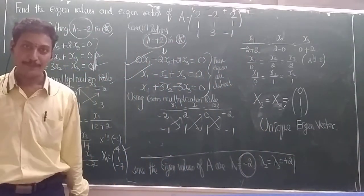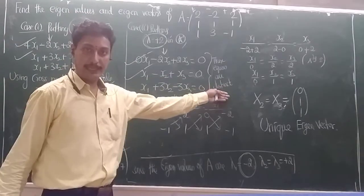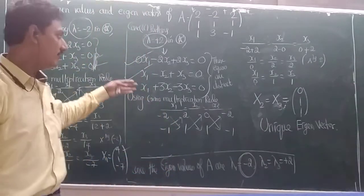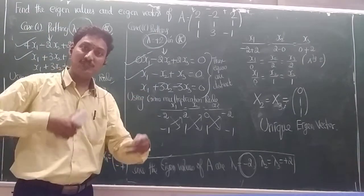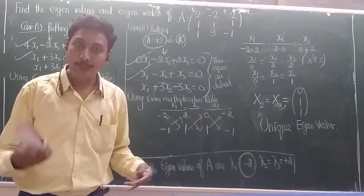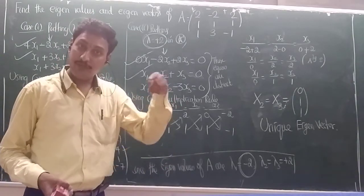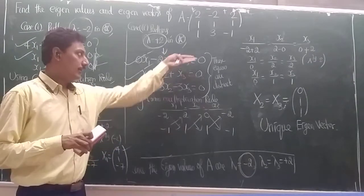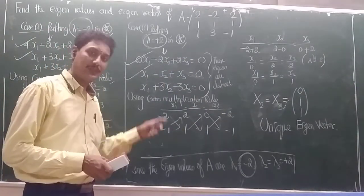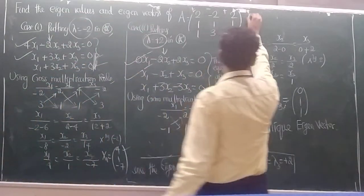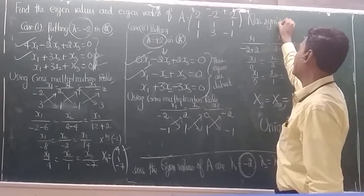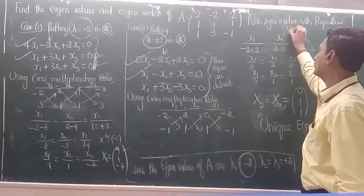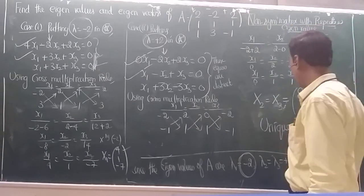Why is this eigenvector unique? Because the system of equations for λ = +2 are all distinct. When the equations are distinct, they yield only a single eigenvector. By contrast, when equations are the same (repeated), they can generate different eigenvectors by setting x₁=0, x₂=0, or x₃=0 separately. This problem is a non-symmetric matrix with repeated eigenvalues that yields a unique eigenvector.